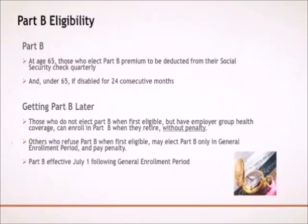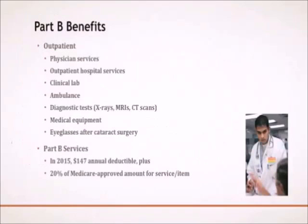If you delay signing up for Part B coverage at age 65 because you are covered by other credible health insurance, such as your employer's health insurance plan, when you do not elect to subscribe to Medicare Part B, you only have 63 days to sign up for Part B. If you do not sign up within the 63 days, you will have to wait for the Part B general enrollment, which is January to March, with a July 1st effective date. Also, there is a penalty: for each 12-month period you delay enrollment in Medicare Part B, you will have to pay a 10% Part B premium penalty for as long as you are on Medicare.